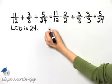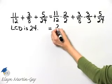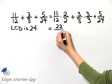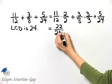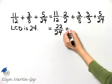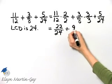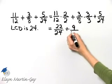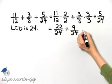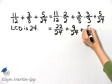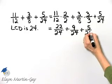Now let's see what we have. 11 times 2 is 22, over 12 times 2 is 24, plus 3 times 3 is 9, over 8 times 3 is 24, plus 5 over 24.